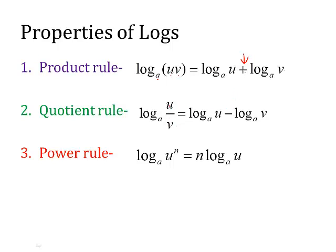The quotient rule starts with two things being divided, that's why we use quotient. We expand it using the same base a, but instead of adding we subtract. So it's log base a of u minus log base a of v. Notice the bases stay the same. When you expand, product rule you add the two terms. Quotient rule, you subtract them.